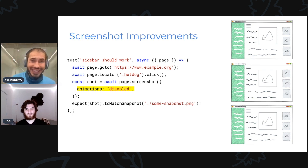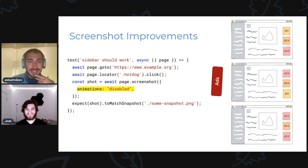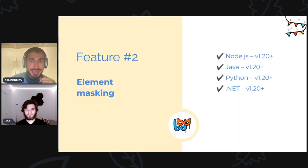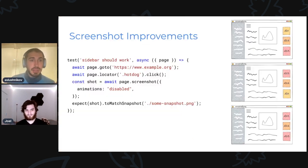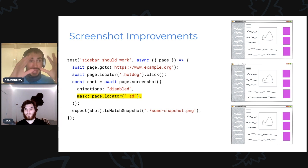But as you noticed, this is still not going to work, right? Because I have my ads, and my ads are all different. So what do I do? It turns out there is another feature I want to present, which is called element masking. This feature is also available across all the languages. To use it, similarly to animations, you pass in a mask with a locator. This locator will actually go and paint overlays over all matching elements.